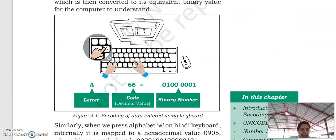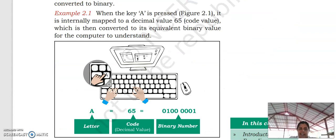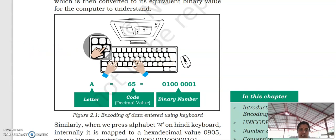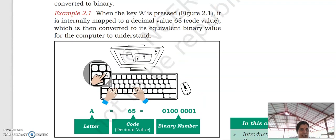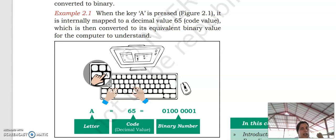So let's find an example. When the key A is pressed, as specified in figure 2.1, it is internally mapped to a decimal value 65, which is the conversion to its equivalent binary value for the computer to understand. When we are pressing the key A, the computer cannot identify this A directly. Then what happened? First,